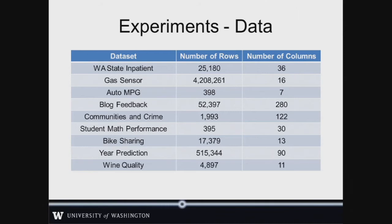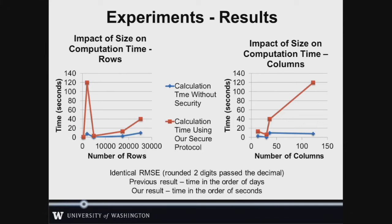So on to the results. We divided data sets of varying sizes among two parties and tested our protocol for correctness, to show the real models two parties could build via our secure linear regression technique. Our protocol is pretty powerful: we get identical error metrics for models using our technique compared to if they had shared their data openly. Our results are also computed in the order of seconds, compared to previous results which took on the order of days to calculate.